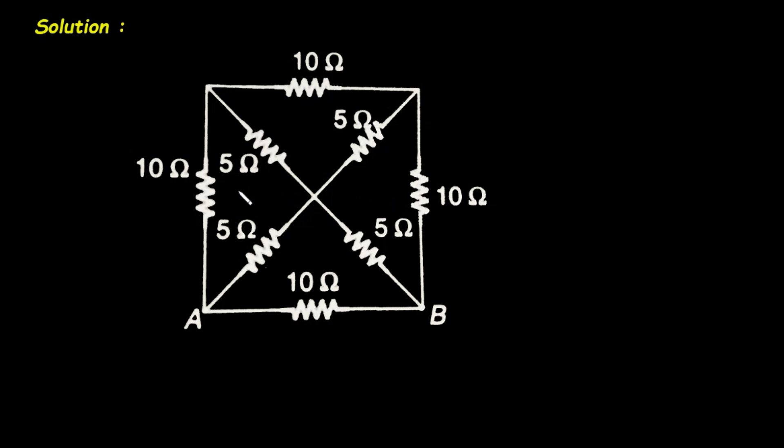That means we can apply symmetry here. So in this case what will happen? We can separate these two resistances. So it will become like this. And these two resistances are already separated.